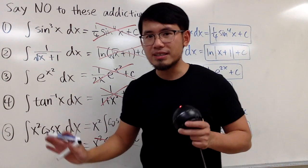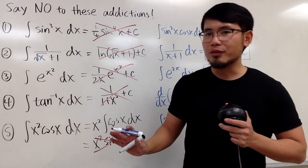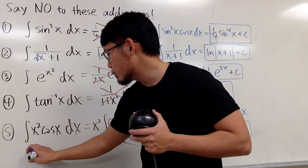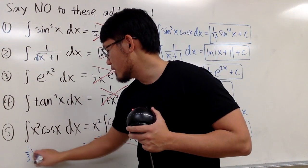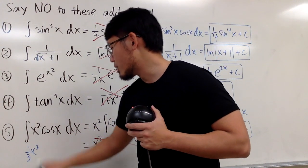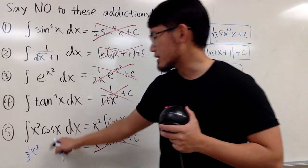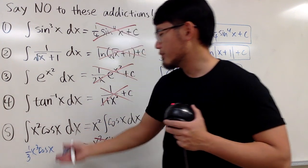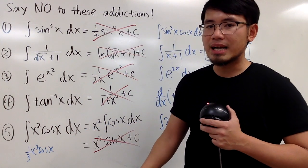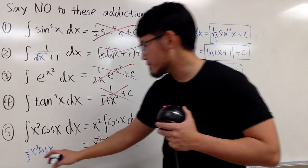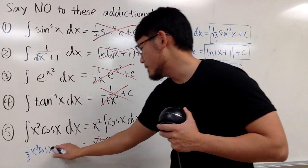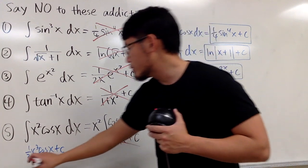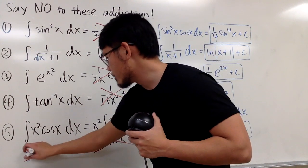Some people don't want to face the reality of doing integration by parts — they just want to integrate the first term, getting one-third x to the third power, and then just write cos x as the second part. No, this is not correct either. Maybe they even put on the plus c, but don't do this.